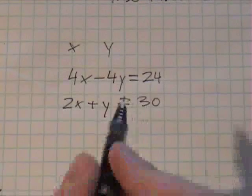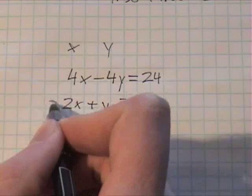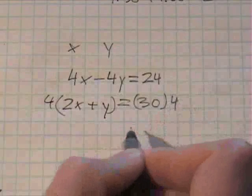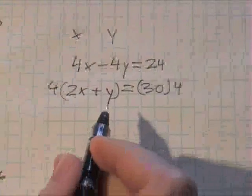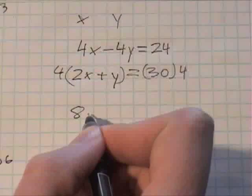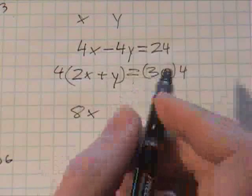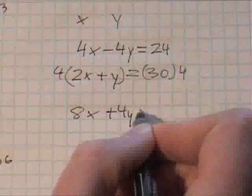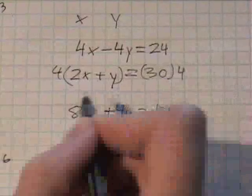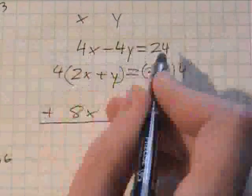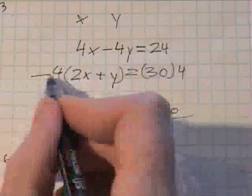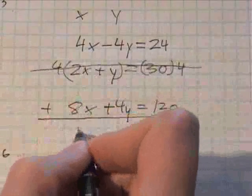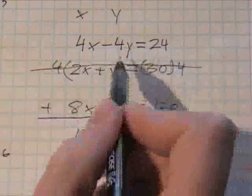So let's times everything by four on this and this side. So you have 8x. Okay, 8x plus 4y equals 120. And that's plus this one and this one. So don't look at this here, we've already got that step done.